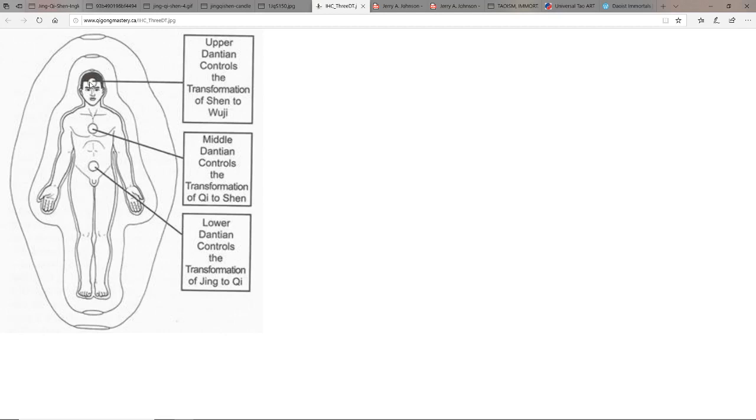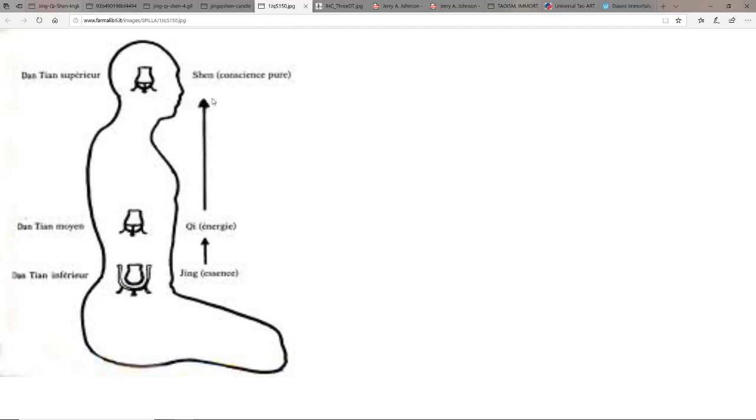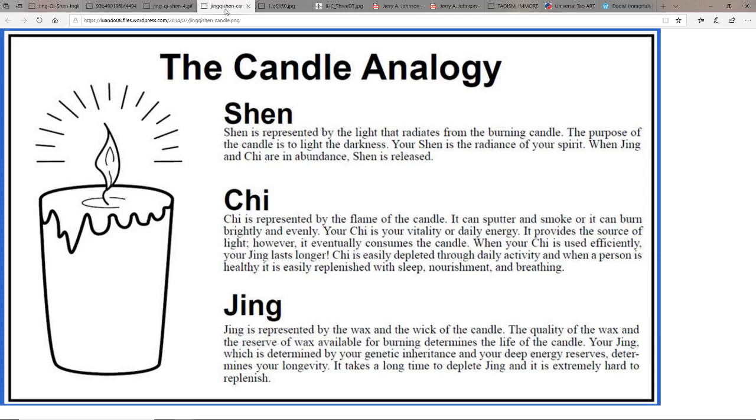When that overflows and goes up into the upper dantian and is transformed into shen, that's when we develop great spiritual powers - discernment, clarity, but also really the ability to help others heal and the ability to connect to the higher realms in much greater ways. So again it kind of flows upwards: jing, chi, and shen.